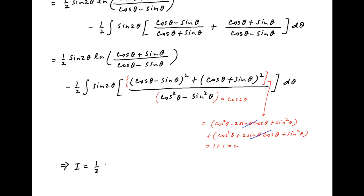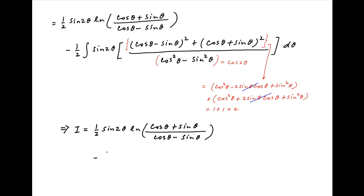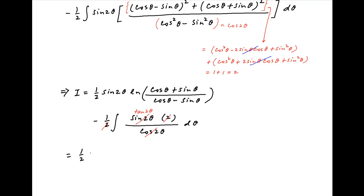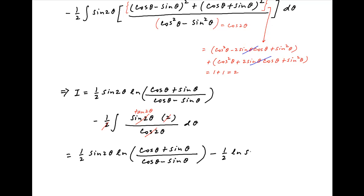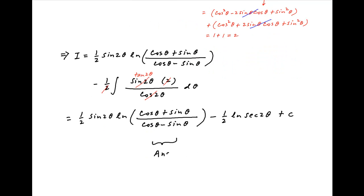Therefore, I equals half of sin 2θ times ln[(cos θ + sin θ)/(cos θ − sin θ)] minus half of the integral of sin 2θ times 2 dθ divided by cos 2θ. This simplifies to half of sin 2θ times ln[(cos θ + sin θ)/(cos θ − sin θ)] minus the integral of tan 2θ dθ, which equals half of ln|sec 2θ|, plus the constant of integration. This is the required answer.